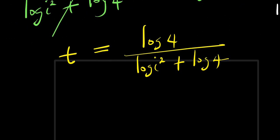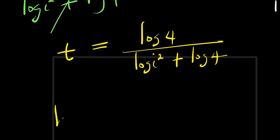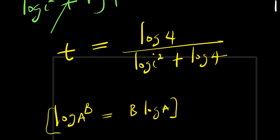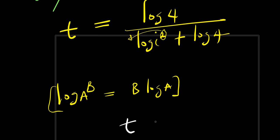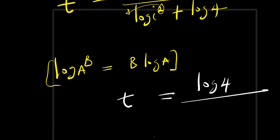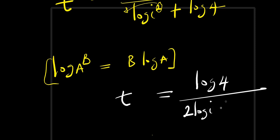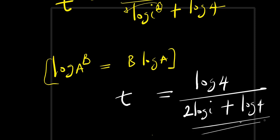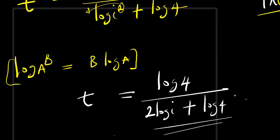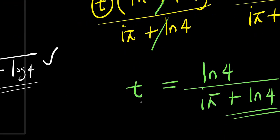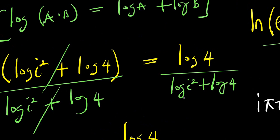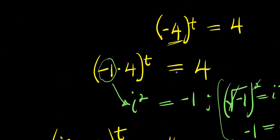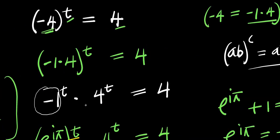We cannot leave our answer this way. Remember, log a to the power of b equals b times log a, so the 2 comes in front of log i. That means t equals log 4 divided by 2 log i plus log 4. Compare this to the previous solution — they are obviously the same thing. So ladies and gentlemen, that is how you solve this problem. Don't forget to subscribe and share this video. Thank you and see you again.